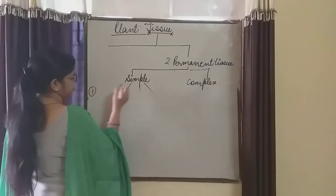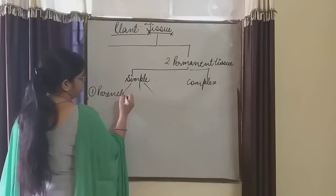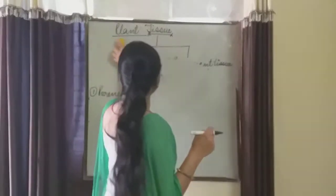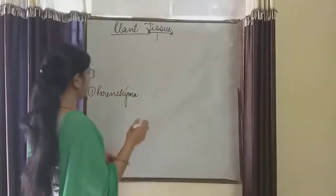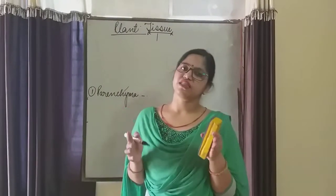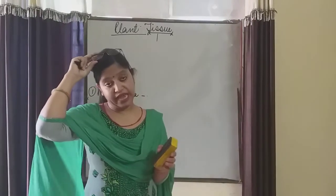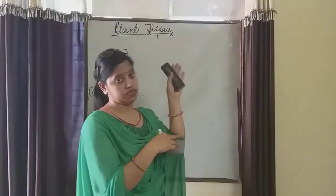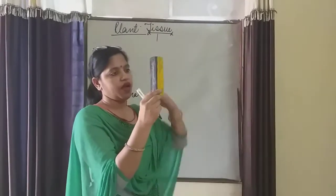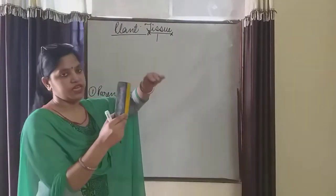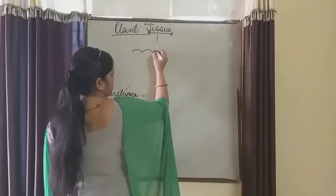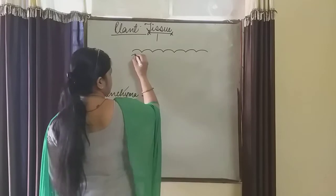First type of simple permanent tissue is parenchyma. In the last video in the table you can see how I divided the parenchyma, colenchyma and sclerenchyma. Whenever we cut the TS section, transverse section or longitudinal section...